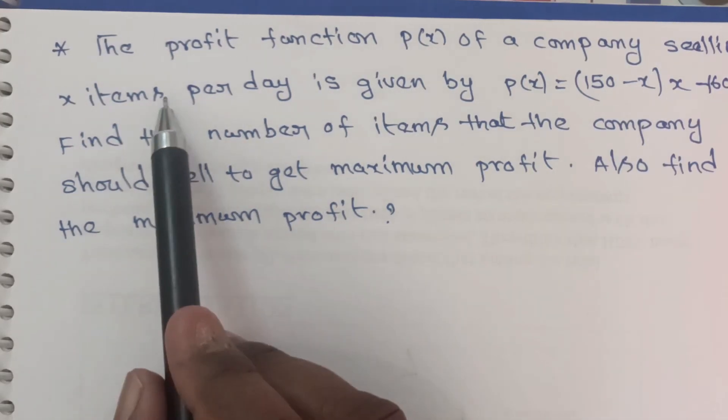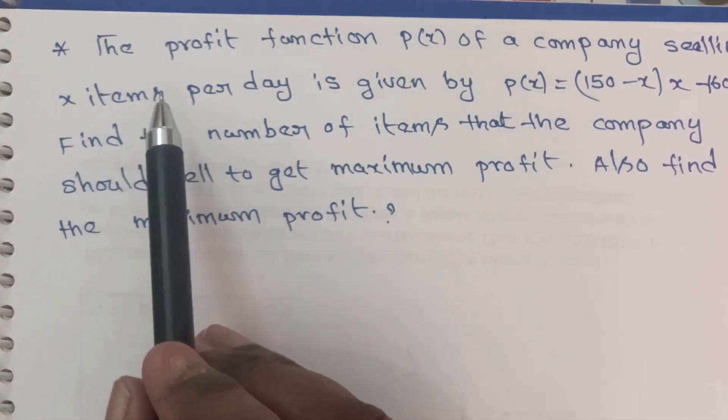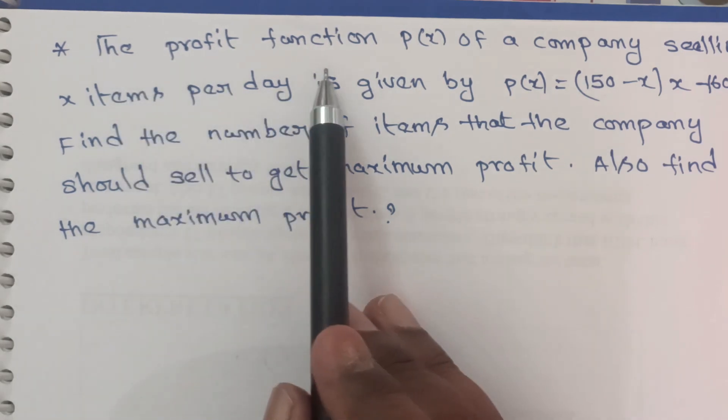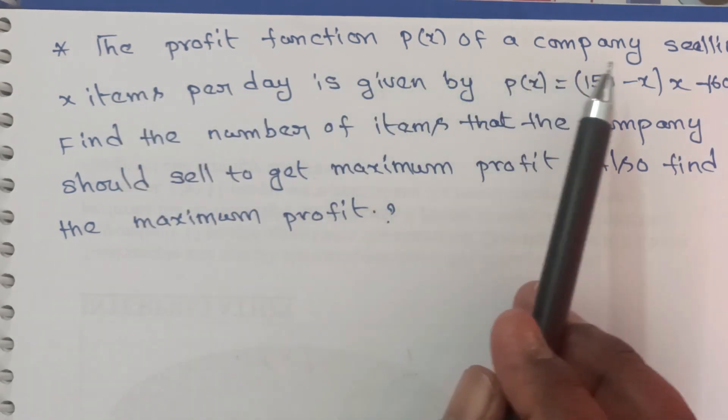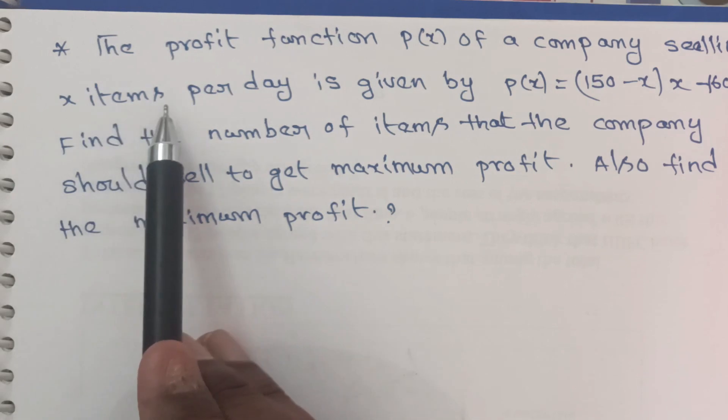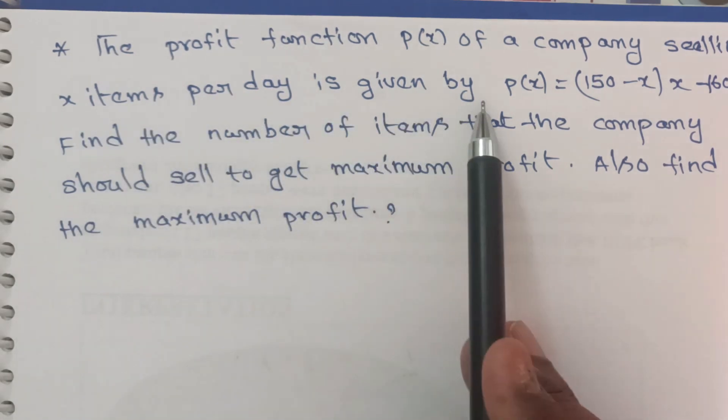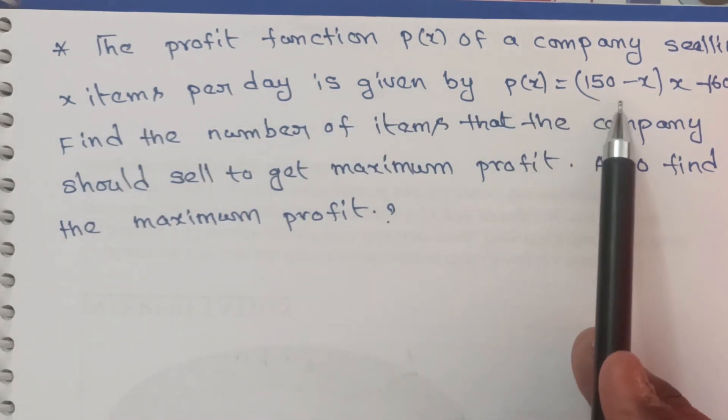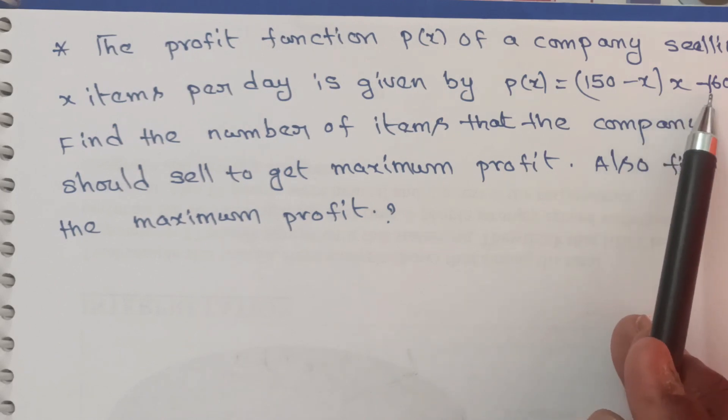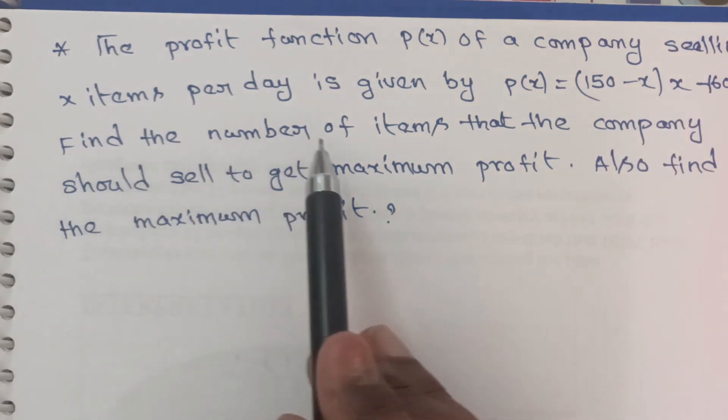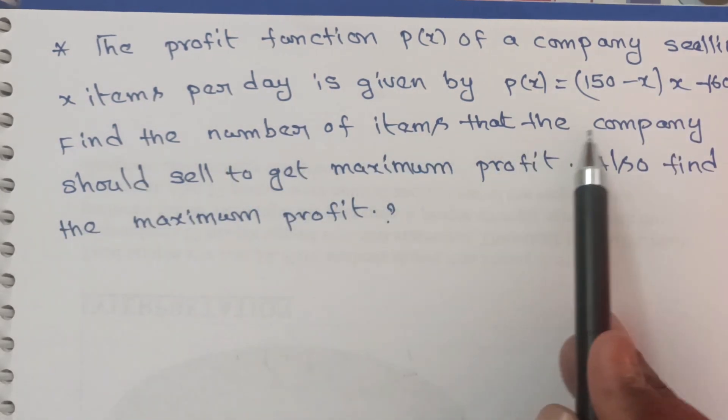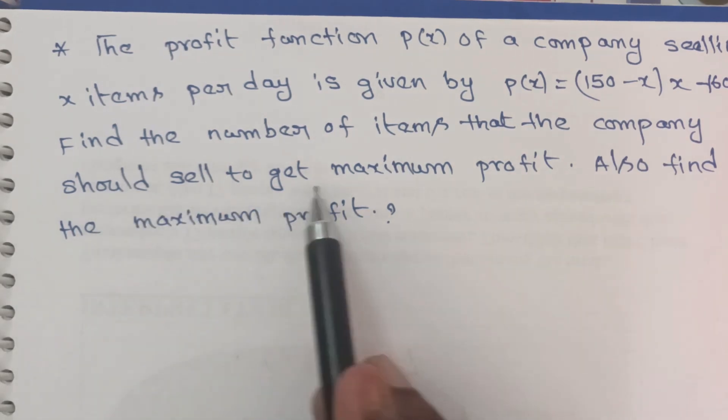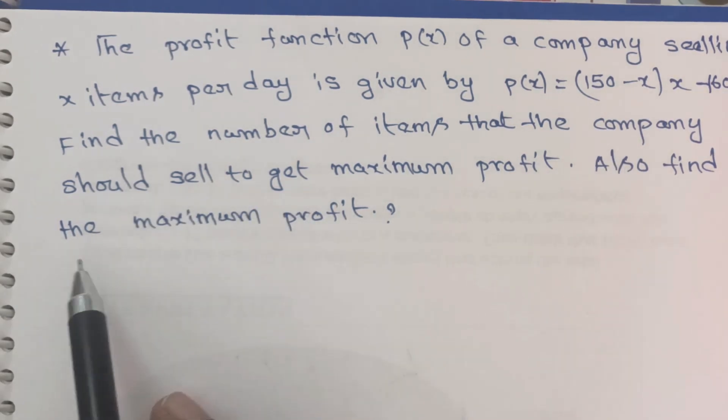Maximum and minimum - the most important long answer question. The profit function p(x) of a company selling x items per day is given by p(x) = (150-x) × x - 1600. Find the number of items that the company should sell to get maximum profit. Also find the maximum profit.